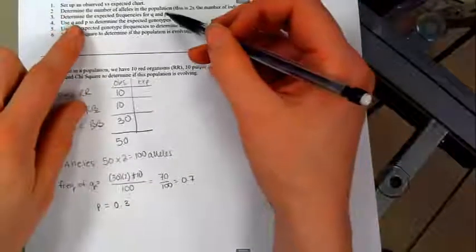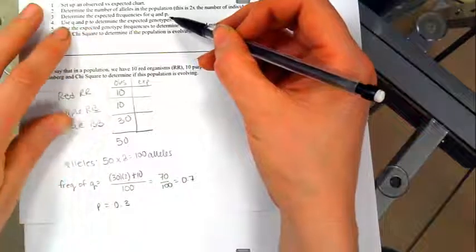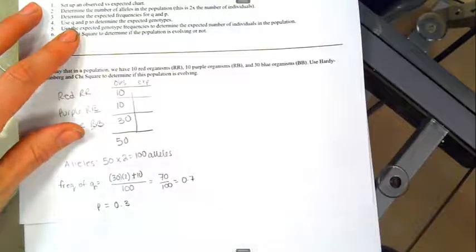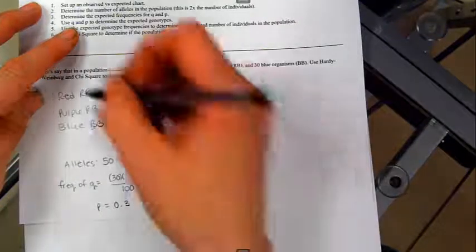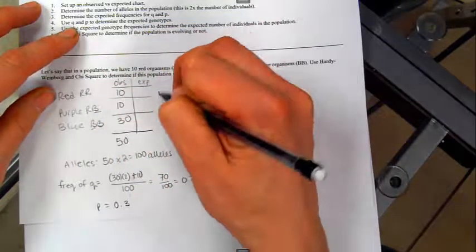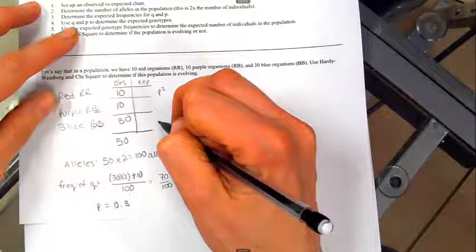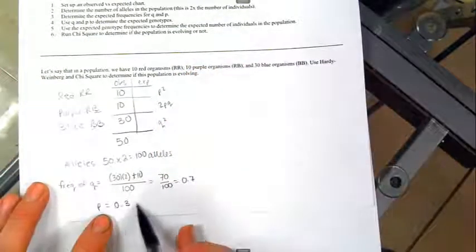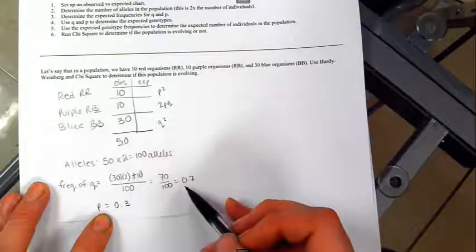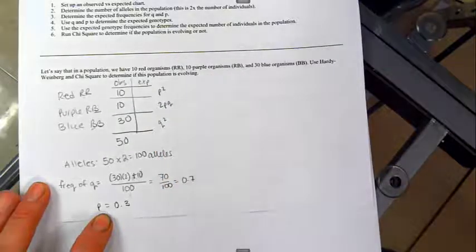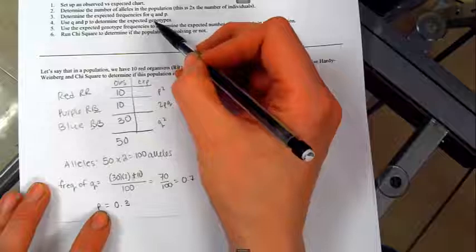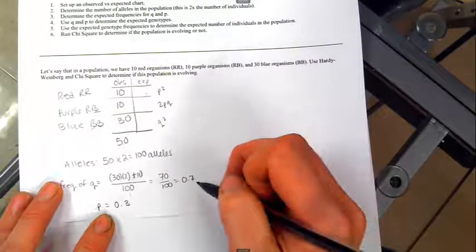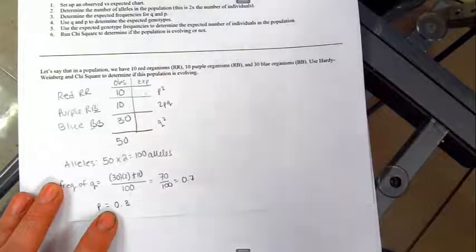We figured out our frequencies expected for Q and P. Now we need to determine the expected genotypes. So P and Q represent alleles. Remember that RR is P squared. BB would be Q squared. And this is 2PQ. So now that we have P and Q, we can go ahead and take these to figure out our expected frequencies. We're not at genotypes yet, so don't fill this in just yet. But first, let's start with, I'm just starting with Q squared.